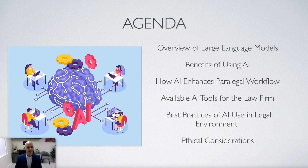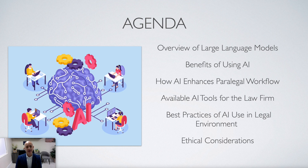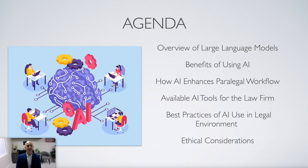We'll cover how AI enhances paralegal workflow — going through the workflow of a paralegal, the different stages and phases of what they do, and how they can use AI to make it go faster and make the work less tedious. Much of the work now being done by AI involves data crunching and analysis that can be cut short using AI tools. We'll also go through tools available to law firms, best practices including ethics, and how to use AI without violating ethical considerations such as attorney-client privilege and the unauthorized practice of law.